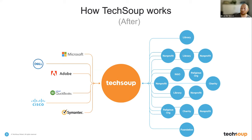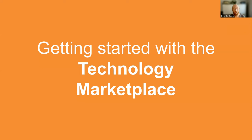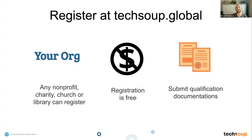Once you have the hardware and software, what do you do with it? That's where events like this come in, where we connect you with local experts who can share best practices on how to use that technology. If you want to get involved with TechSoup, the first thing to do is create your account. Go to techsoup.global, then select your country — whether that's Nigeria, Cameroon, Singapore, or the UK — and it will direct you to the right instance of TechSoup for your country.